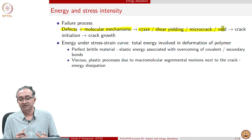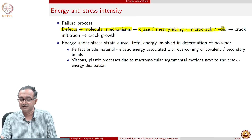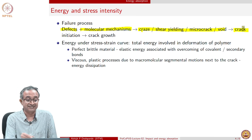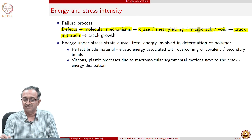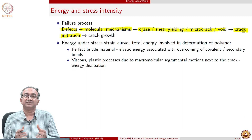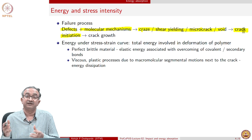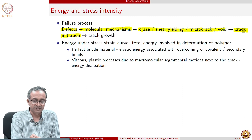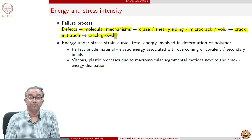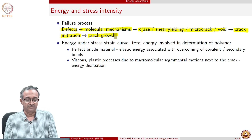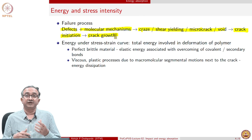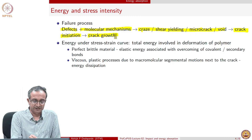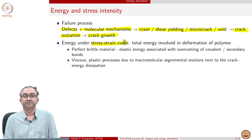Generally, a failure process takes the defects and molecular mechanisms together and leads to certain microstructural features: a micro crack, a void, a shear yielded zone, or crazing in the material. Eventually, when accumulation of these happens, a crack starts. We generally distinguish between a micro crack and a macro crack. A macro crack is when failure is imminent, and then this crack grows leading to failure.